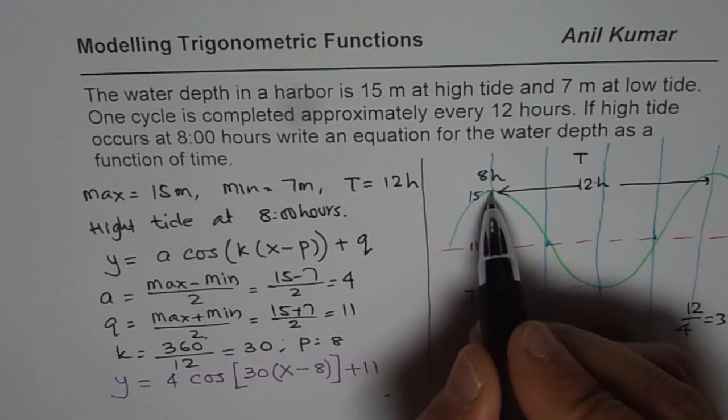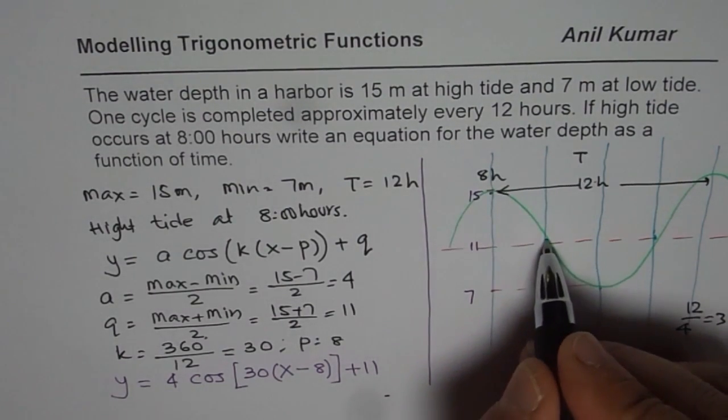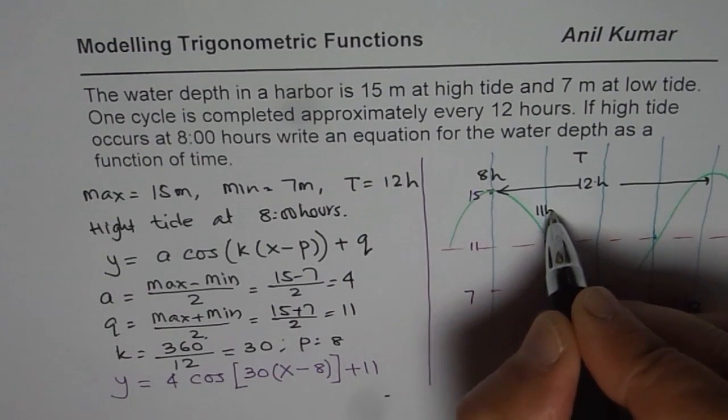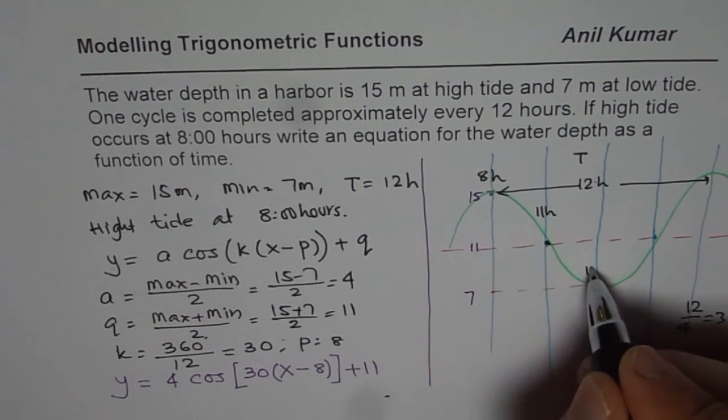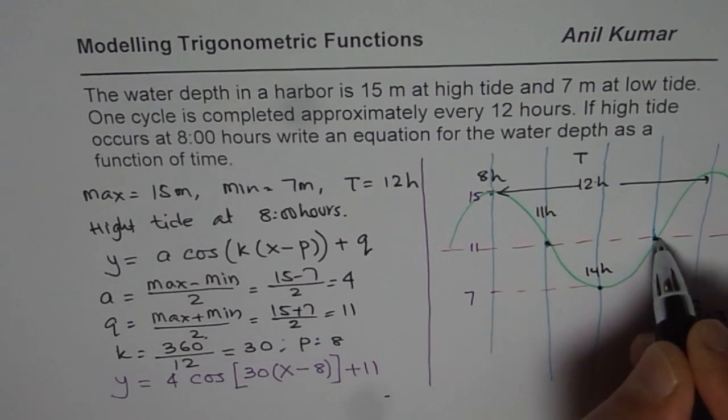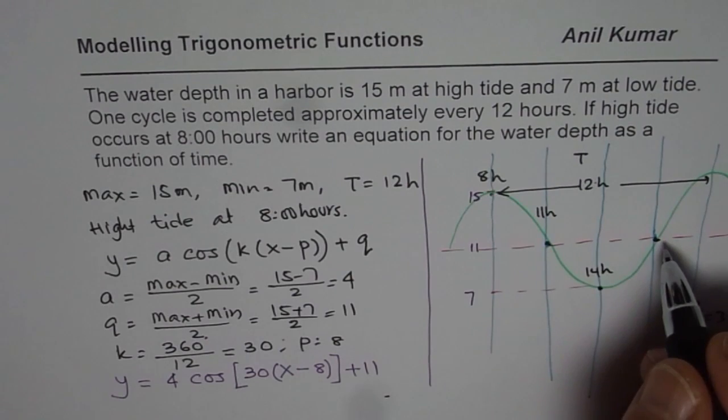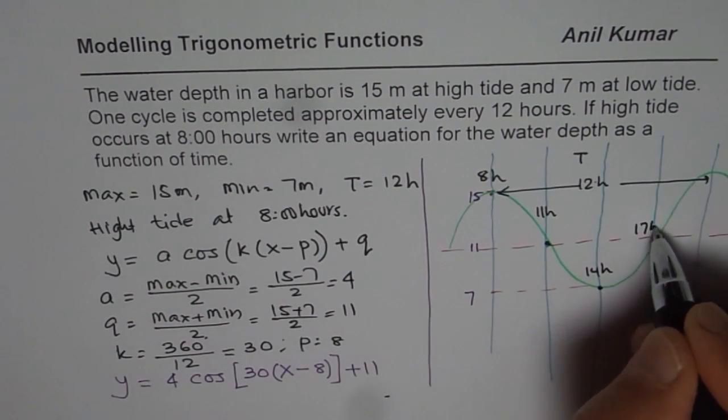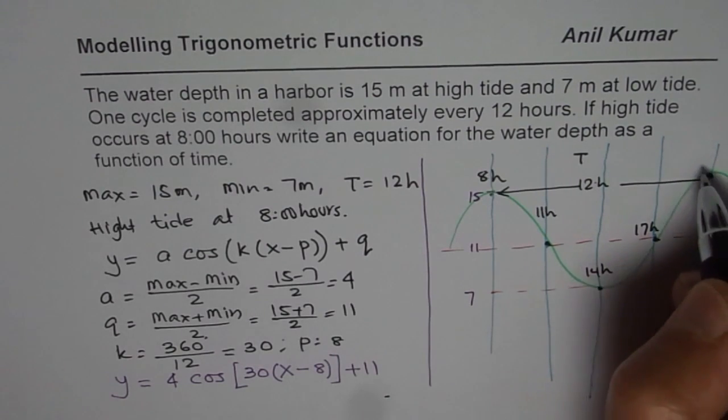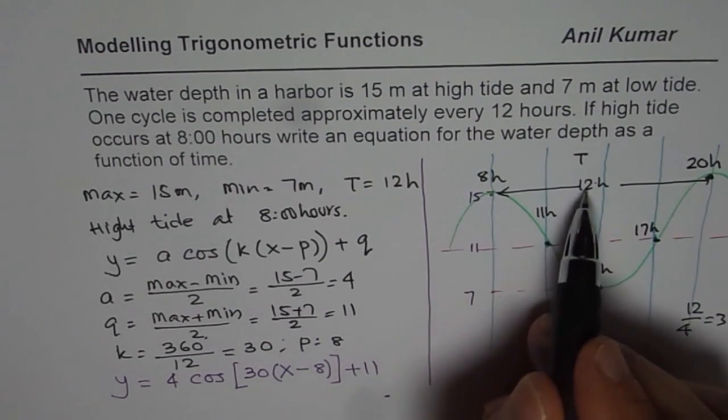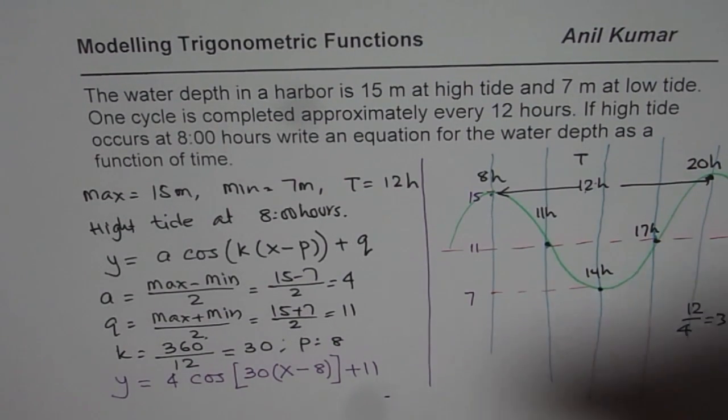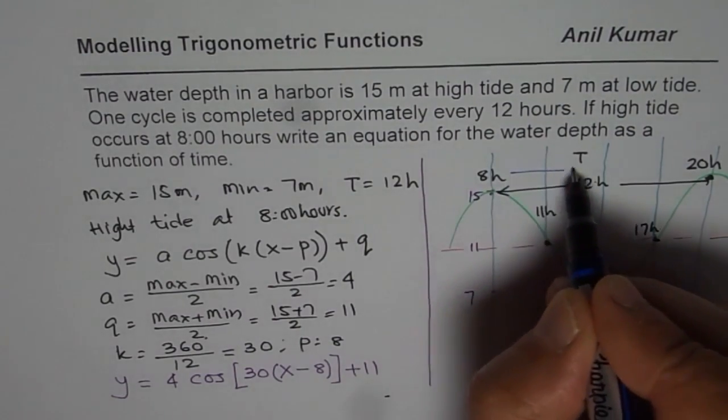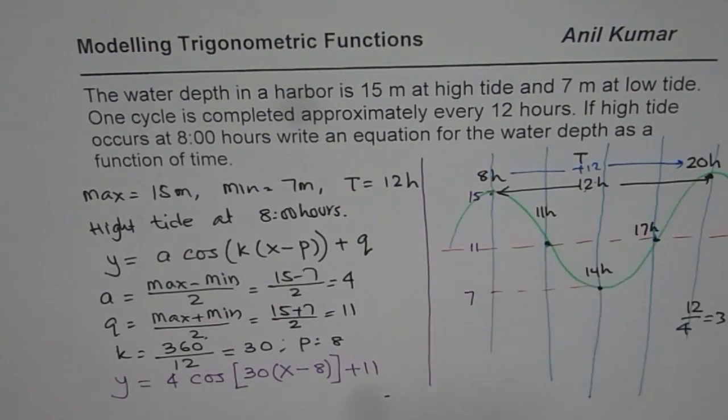So if this happens maximum at 8, then this point is going to happen at 11 hours. Do you see that? And this point will be 3 hours later, 14 hours. And this point will occur when? Plus 3, 17 hours. And then this point will occur at 20 hours. 8 plus 12 is 20. Do you get the connection?